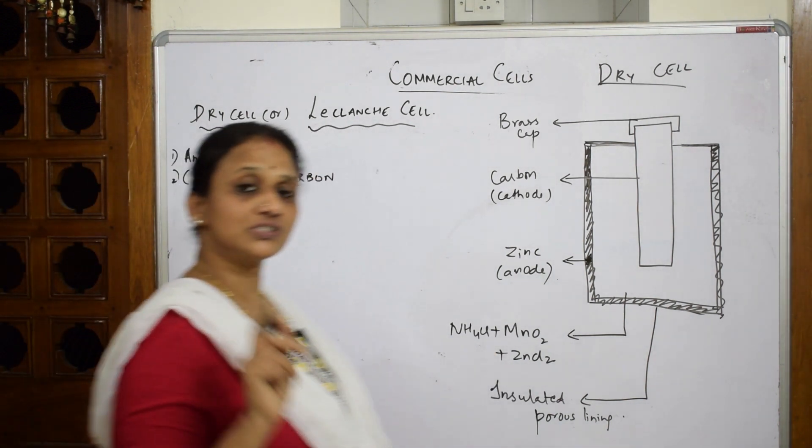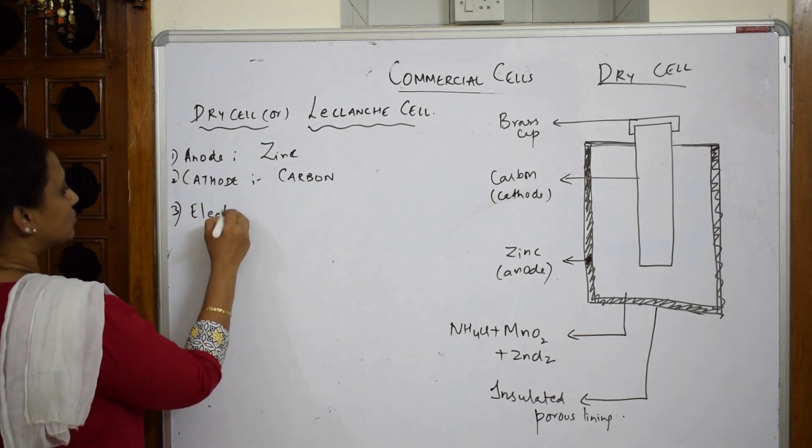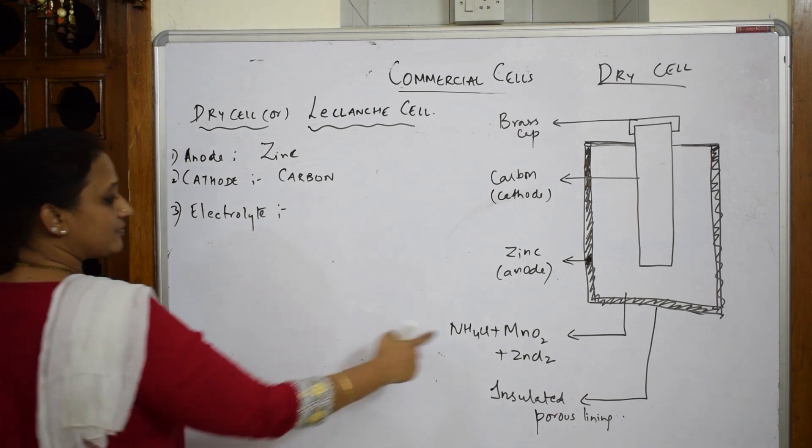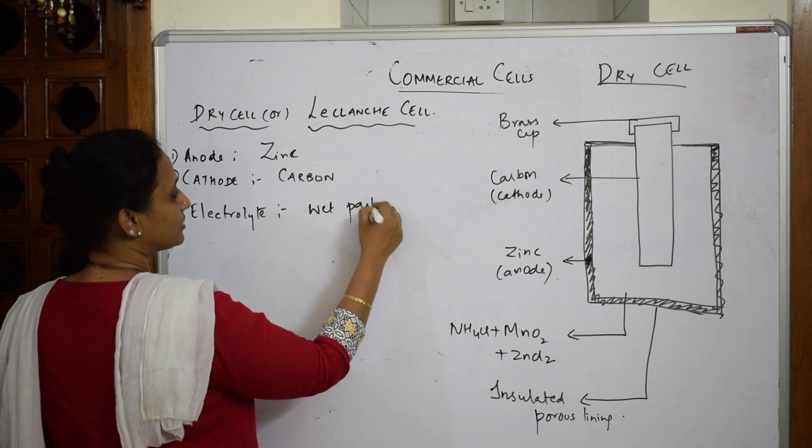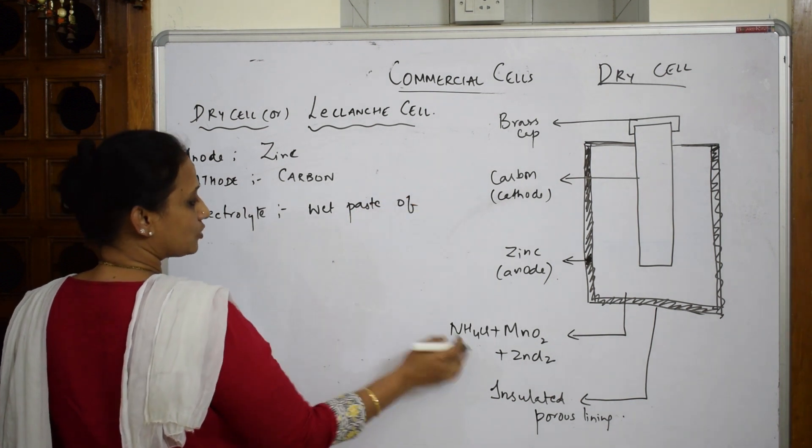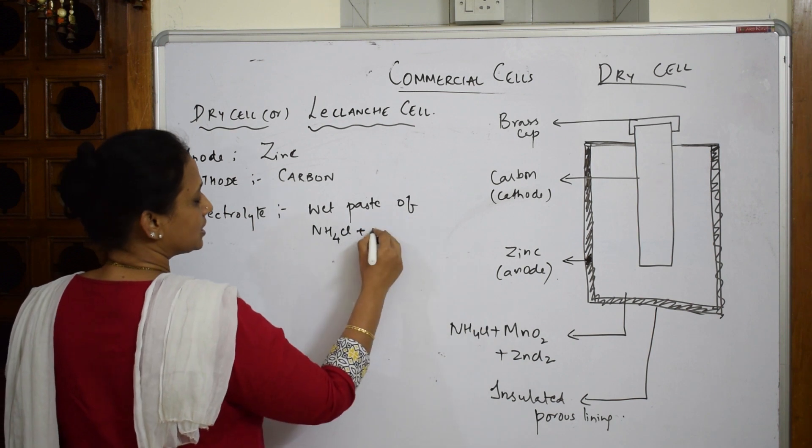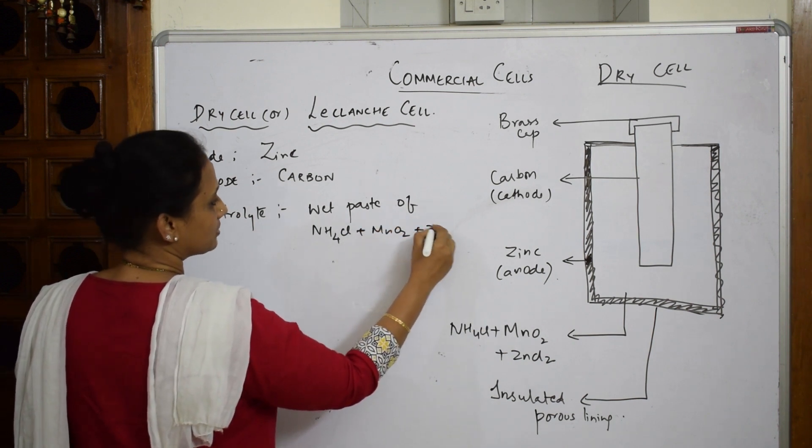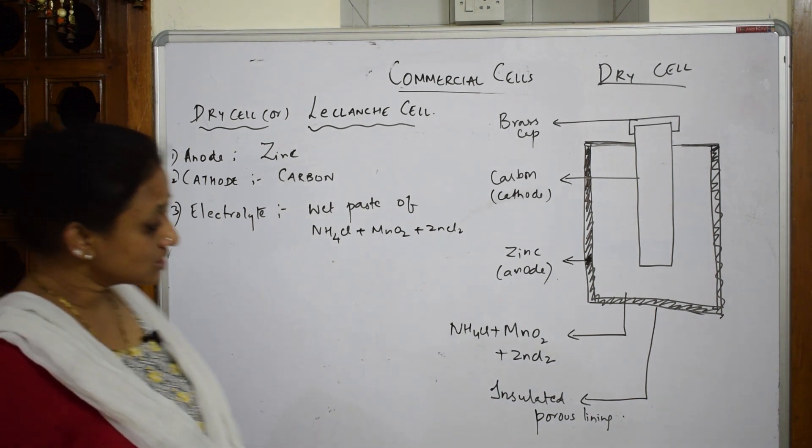What is electrolytic solution? Electrolyte is a wet paste of ammonium chloride plus MnO2 and zinc chloride. Basically it is a wet paste of this combination. That is the electrolyte.